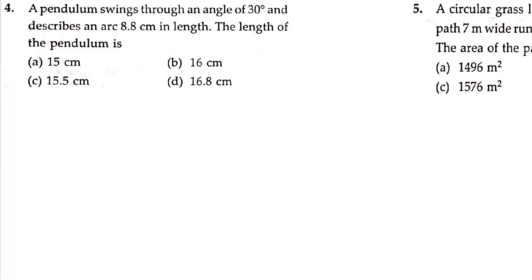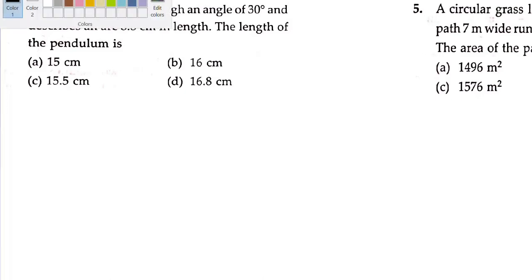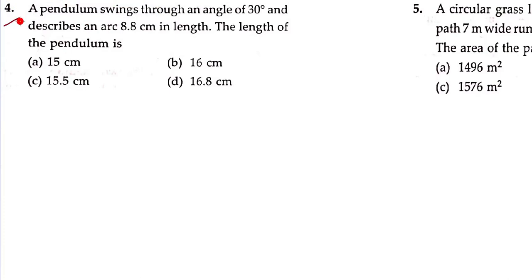Okay, now let's see which problem is here. Question number 4: A pendulum swings through an angle of 30 degrees and describes an arc of 8.8 cm in length. The length of pendulum is — so let's see what we need to do here. We need to understand what the problem is, what data has been given, and we have the formula.